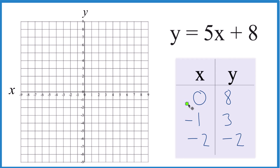If x is 0, y is 8 — right there. X is negative 1, y is 3 — negative 1 and 3, plotted there as well.